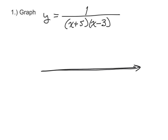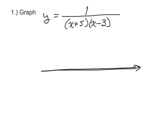Asymptotes are going to happen whenever the denominator is equal to 0 — so whenever x plus 5 equals 0 or x minus 3 equals 0. If x plus 5 equals 0, then x equals negative 5. If x minus 3 equals 0, then x equals 3. These are where our two vertical asymptotes are, at x equals negative 5 and x equals 3. Let's plot those with two vertical dotted lines.